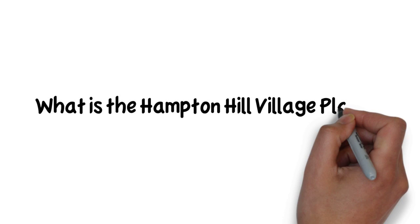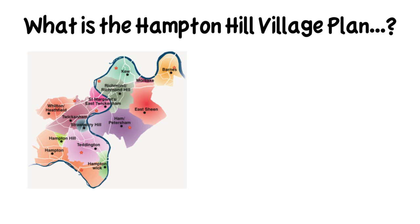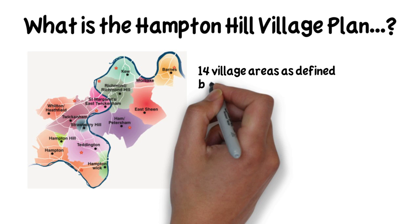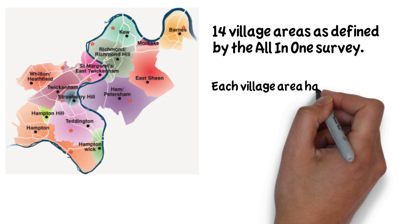This is a short video which explains what the Hampton Hill Village Plan is and how you can get involved in shaping it. This is a map of the Borough of Richmond-upon-Thames, showing the 14 different village areas. The areas were defined by residents in the All-in-One survey carried out in 2010.